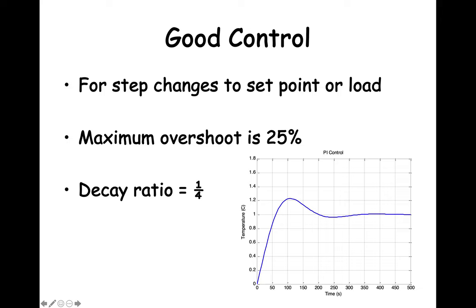Here are the definitions of good control we will use in this class when setting the values of Kp, tau i, and tau d. In general, most process operators want the response to a step change in either the setpoint or a variable process input to produce a maximum overshoot within 25 percent. The other good control performance response is that the decay ratio is one quarter or less, again in response to a step change in one of the inputs. There are other process control indicators, but they are beyond what we have time for in this class. We may also run into cases where the user will set other performance criteria, but the maximum overshoot and decay ratios are the most common criteria.